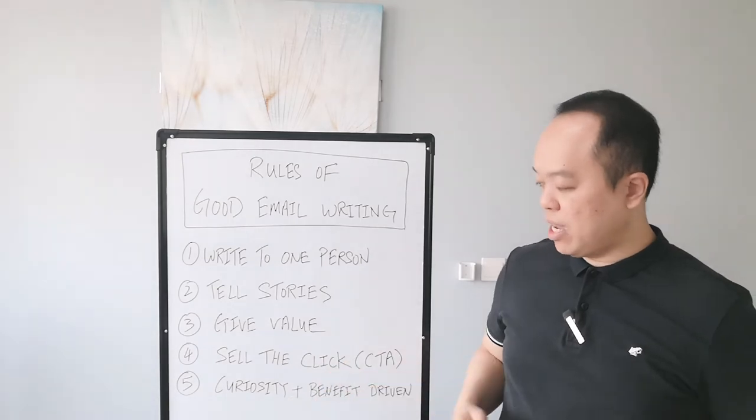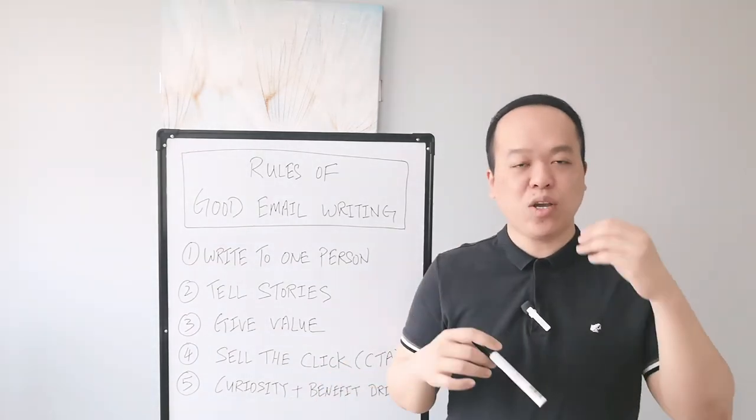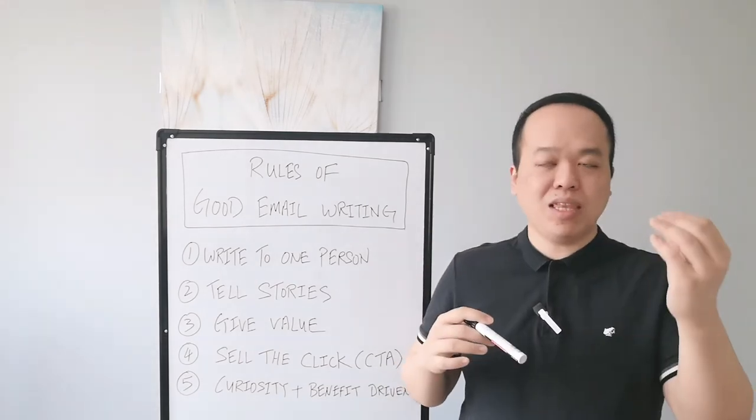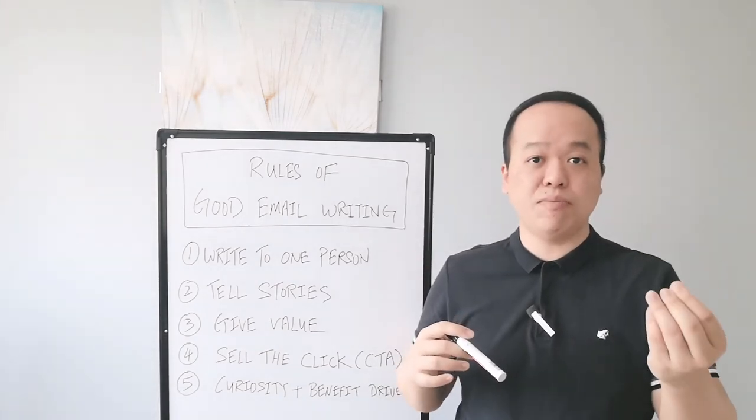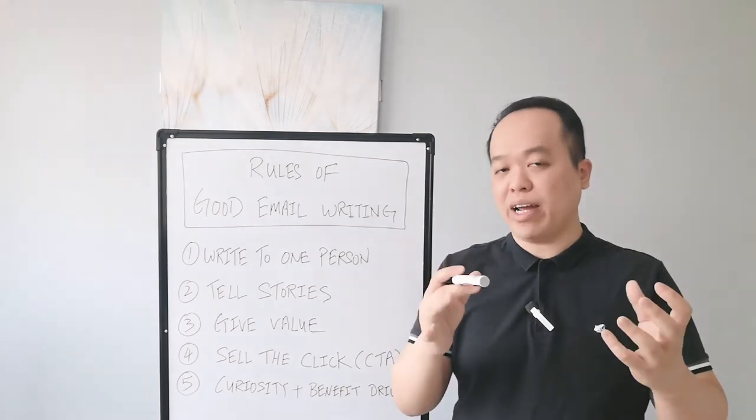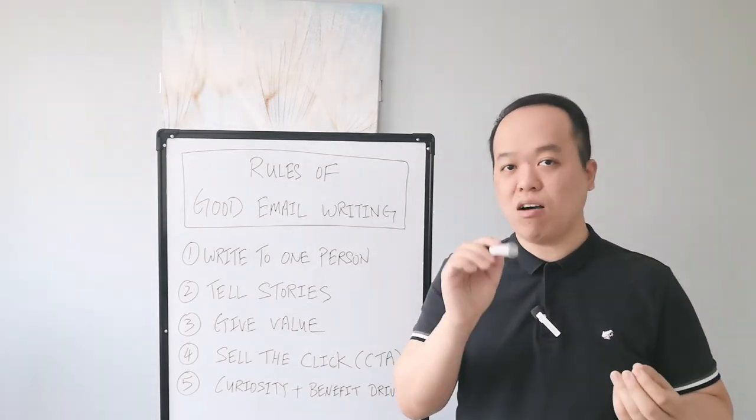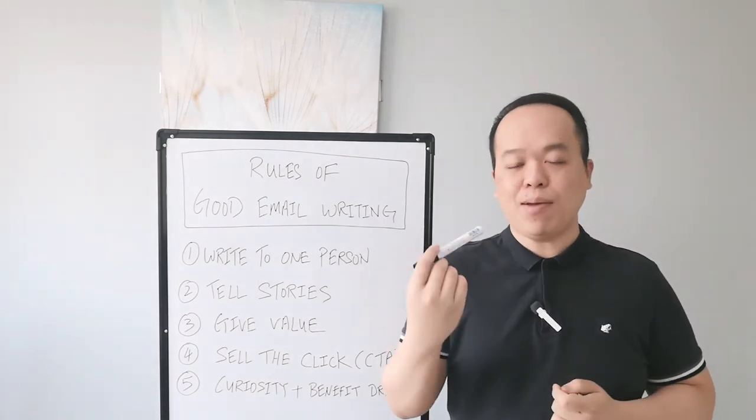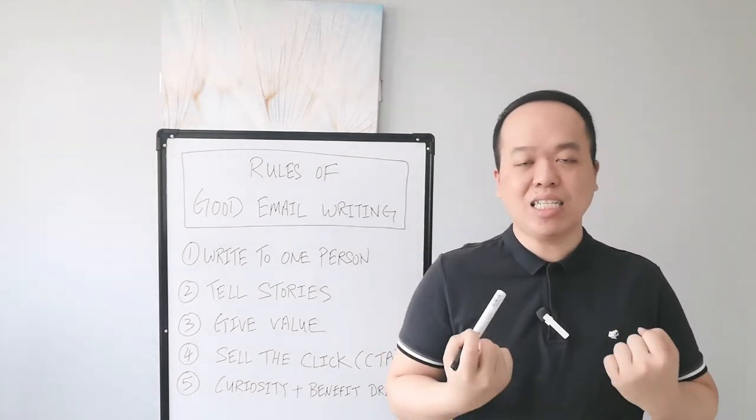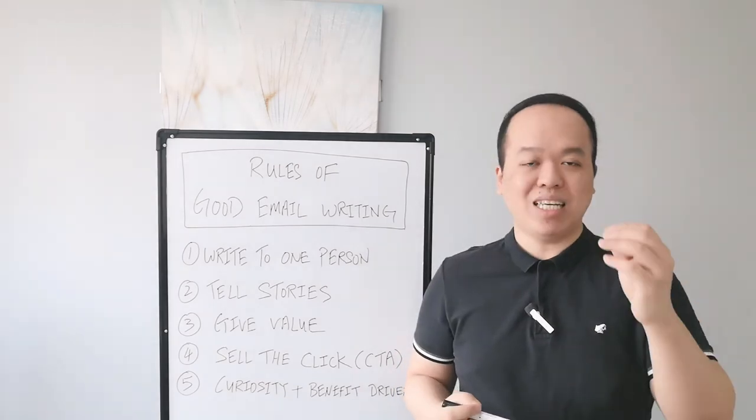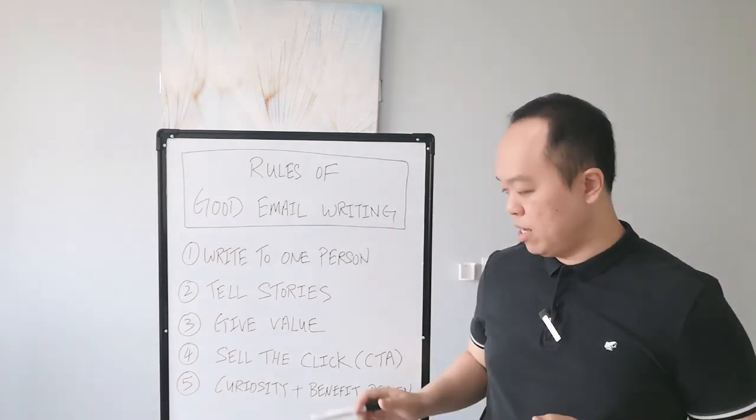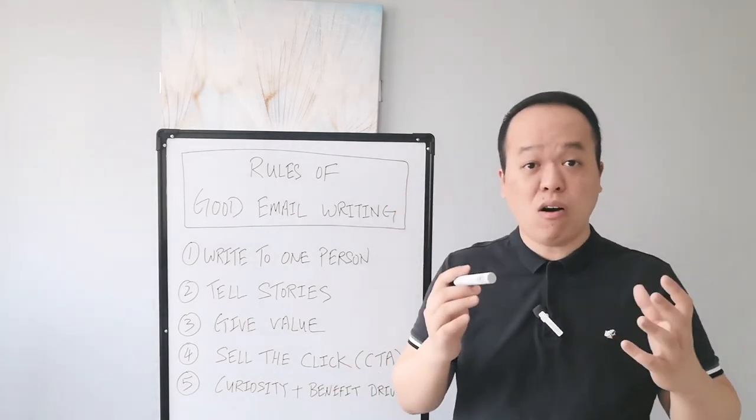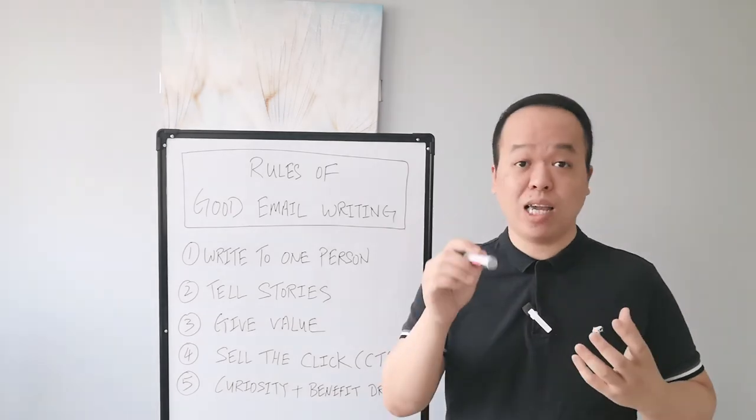Rule number five is to always create curiosity and benefit-driven content. This is something that is very crucial because if you want to attract your subscribers to click on your email link, you need to generate curiosity. You need to let them feel the eagerness to find out what is this product that you're selling, so that you can trigger their curiosity to find out more.